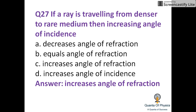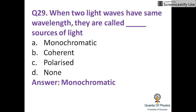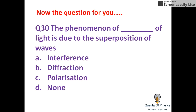If a ray is traveling from a denser to a rarer medium, increasing the angle of incidence causes an increase in the angle of refraction. In the human eye, the image is formed on the retina. When two light waves have the same wavelength, they are called monochromatic sources of light — monochromatic means single wavelength. The phenomenon of interference is due to the superposition of waves. Please comment your answer. Thanks for watching.